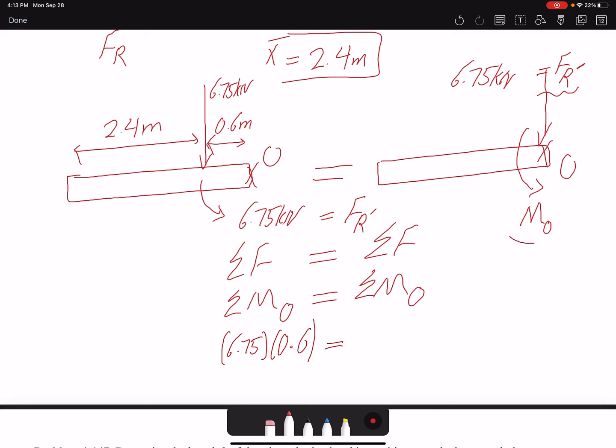And for the right side, the force is not creating a moment about point O because there is no moment arm. The only moment that I have is MO. So here I can directly find MO to be 4.05 kilonewton-meters.